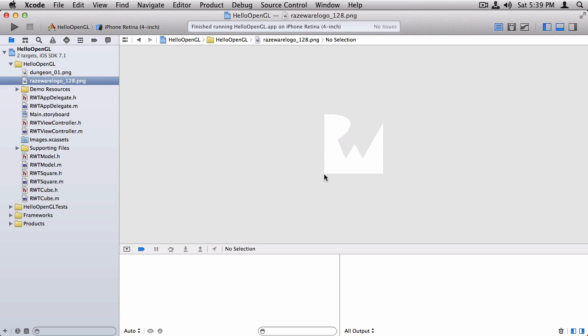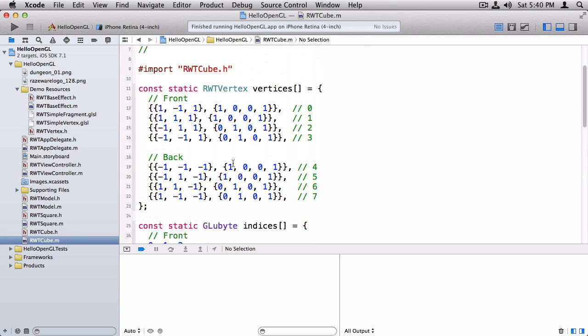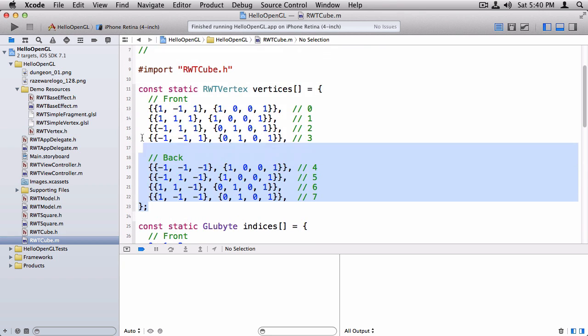So the first thing we need to do is open up RWTVertex.h and add in some texture coordinates. So that's going to be an array of two floats. So now that we have new texture coordinates, we need to make sure to pass those in in our cube here. So again, as we discussed in the lecture, it's not enough anymore to just reuse this because we're going to want to have different texture coordinates for each side. So I've already figured that all out, so I'm going to paste that in here.